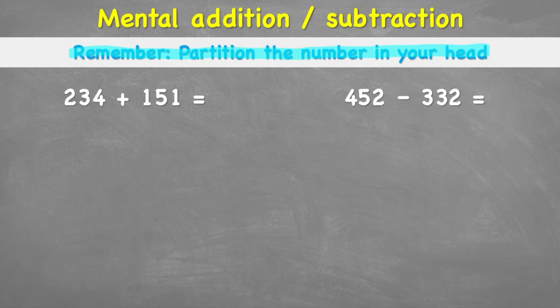So looking at this first example, the addition, we have the number 234, which is made up of 4 ones, 3 tens and 200s. And we have 151, which is 1 one, 5 tens and 100.